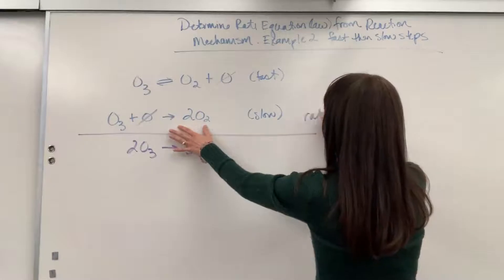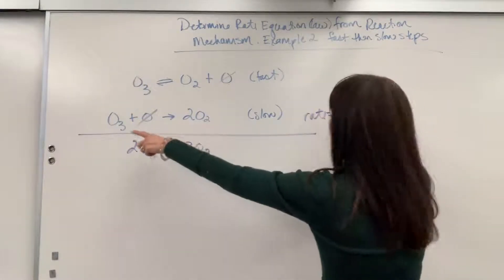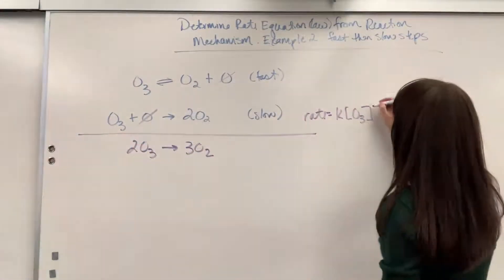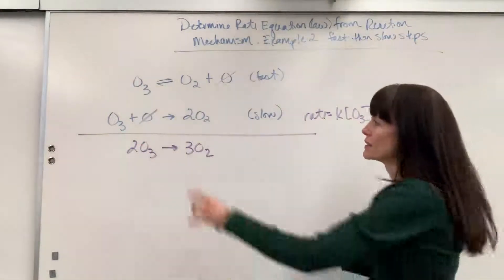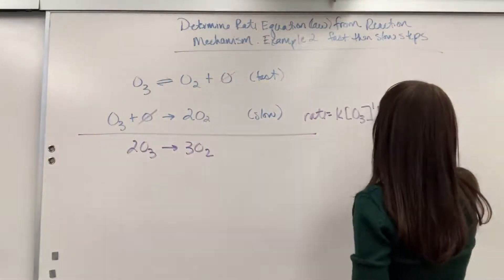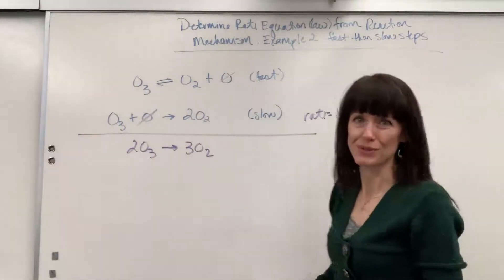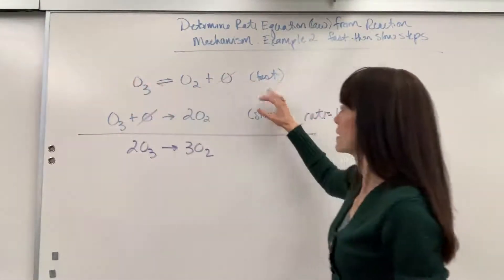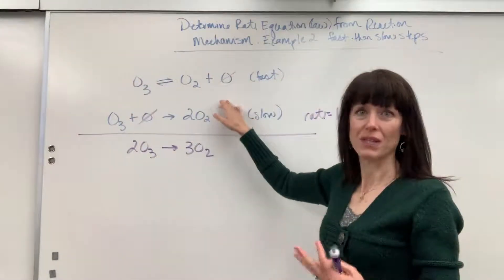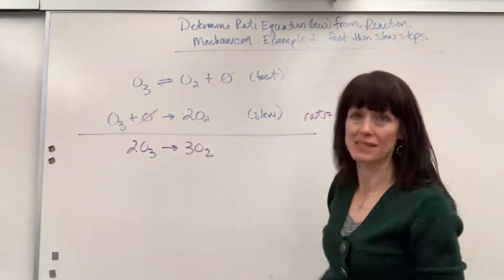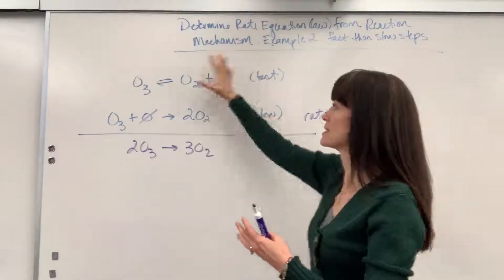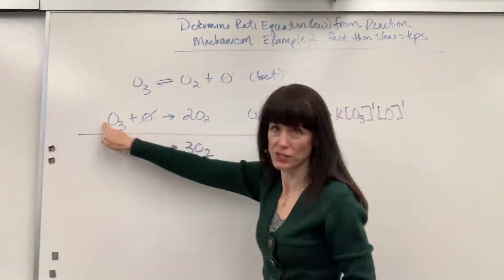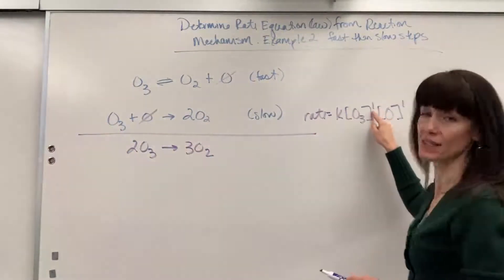Rate will equal K times the concentration of O3, ozone, raised to the first order, times the concentration of O raised to the first order. Now, a little reminder, this right here is all theoretical. A chemist came up with these steps. And because this is theoretical, we can assume that whatever the coefficient is, that is the order.